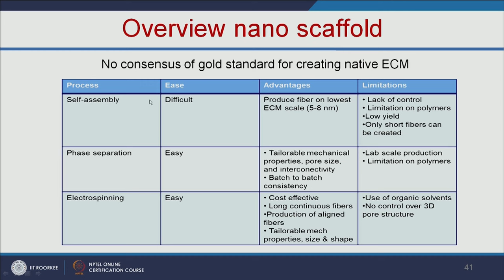Comparing the methods: self-assembly is very difficult to make but produces nanofiber scaffolds that closely mimic the ECM; drawbacks include lack of control, limited polymer types, only short fibers, and low yield. Phase separation is easier than self-assembly, allows tailorable mechanical properties with specific pore sizes, and maintains batch-to-batch consistency; but it is limited to lab scale and only a few polymer types. Electrospinning is easy and cost-effective, allows long continuous fibers, production of aligned fibers, and tailorable mechanical properties; limitations include the use of organic solvents in some cases and no control over three-dimensional pore structure.